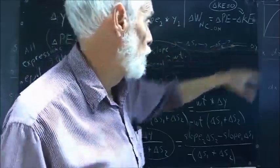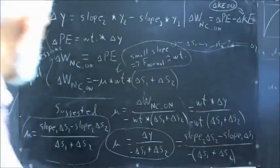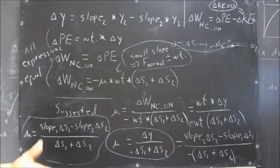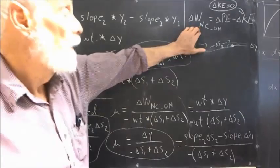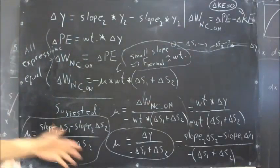Between the initial and final point of the motion, a very crude diagram here. You have delta S1, you have delta S2, you have delta Y. Starting from rest, ending at rest. So delta KE is zero.